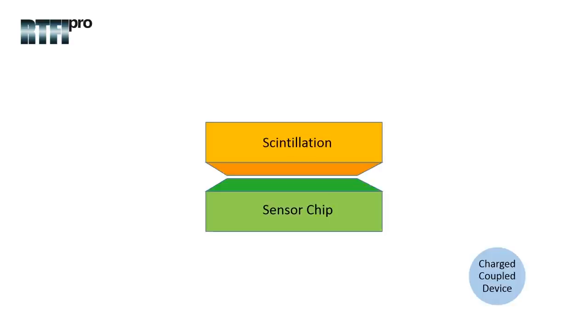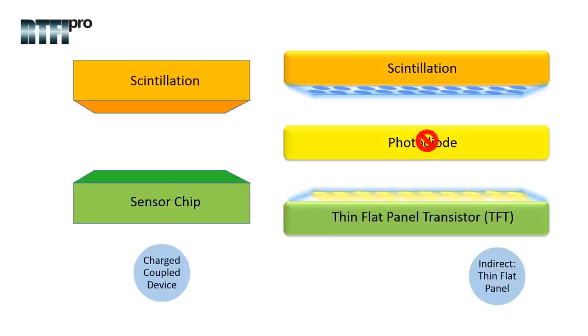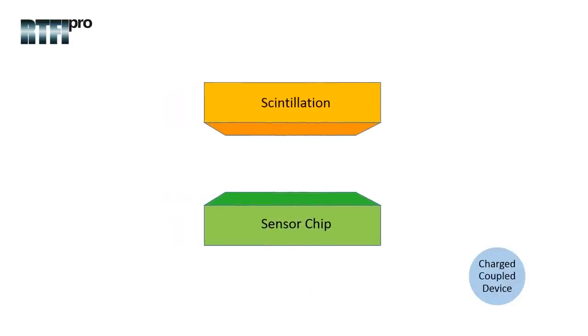The second type of indirect system is charge coupled devices. Charge coupled device systems differ from TFT as there is no photodiode or TFT layer. The scintillation layer is optically coupled to each charge coupled device sensor by either lenses or fiber optics.